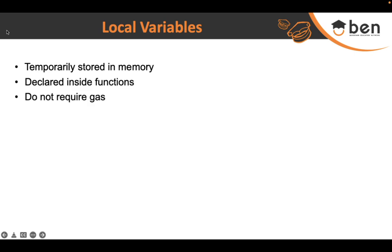Since local variables are not persistent and are only used during function execution, they do not require any gas fee. The visibility of local variables is limited to the function — there is no concept of public, private, or internal here. If a balance variable is defined inside a function, it can only be used within that function; its scope is internal to the function.